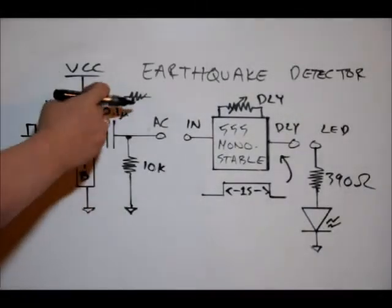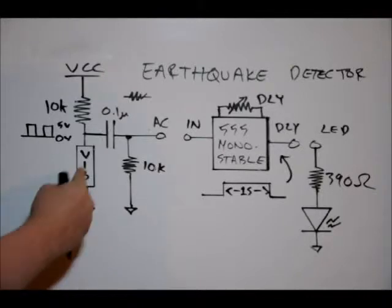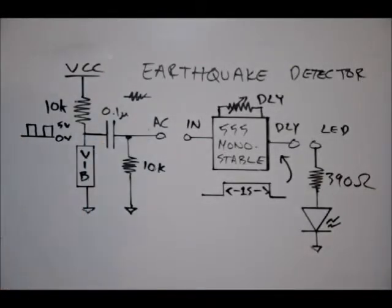This is our 10K protective resistor and our vibration sensor. When it detects vibration, it basically acts to short it to ground. So we'll see between spikes of 0 to 5 volts, because our VCC, our power supply, is 5 volts.